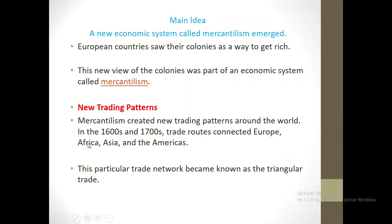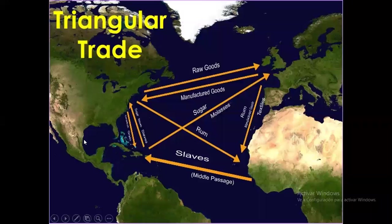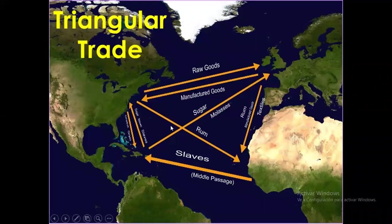Africa was included, but Asia was not. The triangle was between Europe, America, and Africa. In the picture you can see how the exchange worked in this Triangle of Trade.